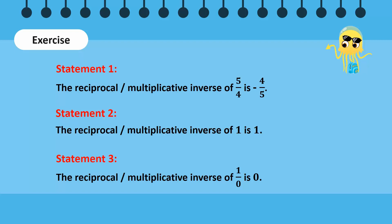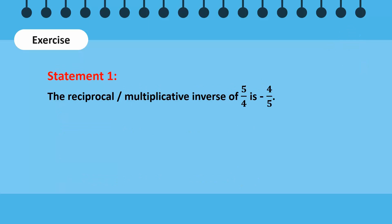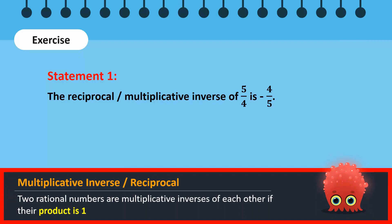Let's review them together. Recall that the sign of a rational number and its reciprocal or multiplicative inverse is the same. And their product must be equal to 1. So, this statement is false. The correct reciprocal of 5 over 4 is 4 over 5.